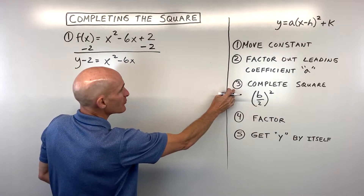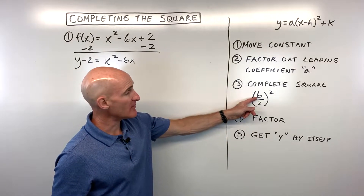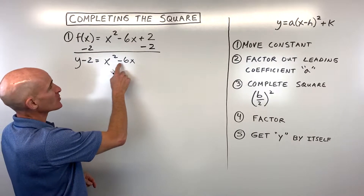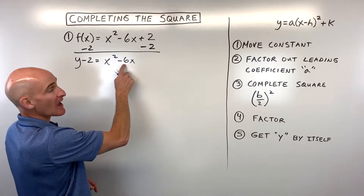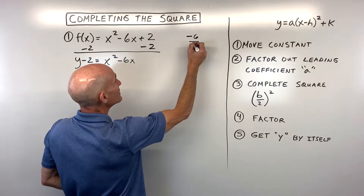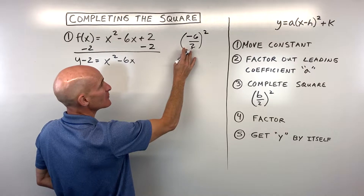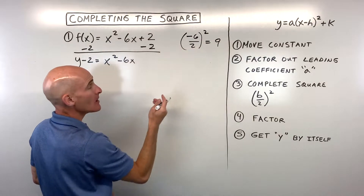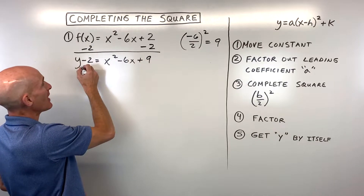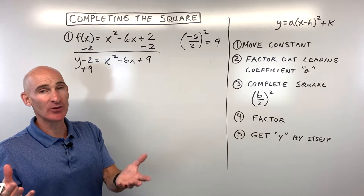For step three we're going to do the completing the square process: we take the b value, divide by two, and square it. The b value goes in ax squared plus bx plus c, so we take half of negative six. Negative six divided by two is negative three, and negative three squared is nine. We add nine to the right side, and to keep it balanced we add nine to the left side as well.